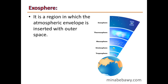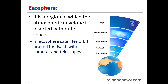The Exosphere is the region where the atmospheric envelope merges with outer space. Satellites orbit around the Earth in this layer, equipped with cameras and telescopes.